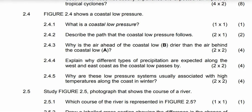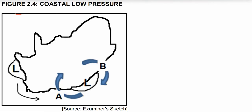Let's waste no time and jump to question 2.4. I am going to be looking at coastal low pressure. So this question is taking us to coastal low pressure. Figure 2.4 shows coastal low pressure — that's L — and that coastal low pressure is along the coast of South Africa, west or east.